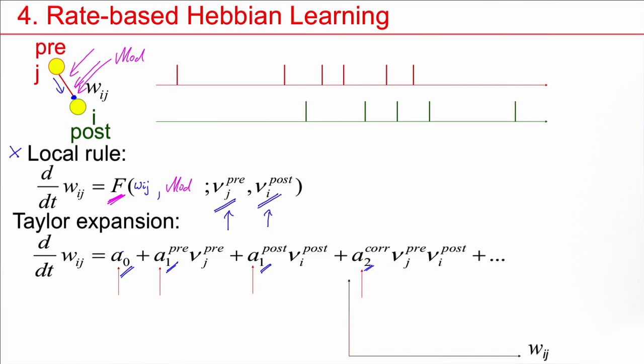And then, of course, there could be joint activity, pre and post together, and that would be picked up by this coefficient here. So a Hebbian rule is a local rule, but it will be sensitive to the joint activity of pre and postsynaptic neurons. Therefore, this is the first Hebbian term that shows up in this expansion.